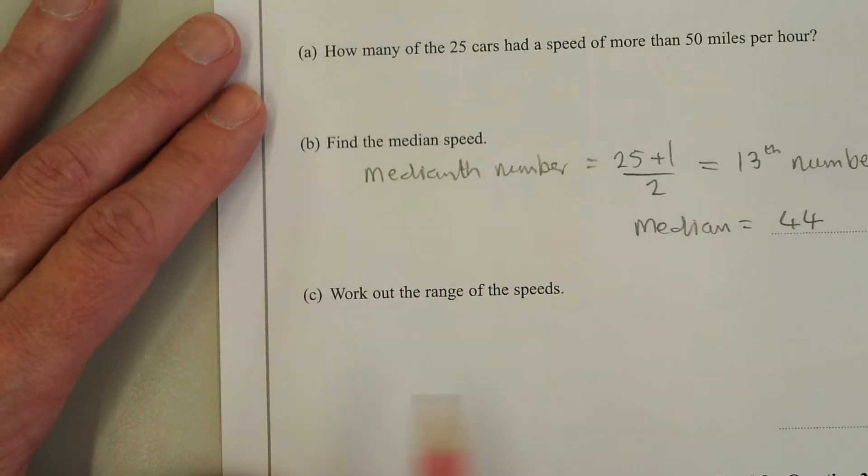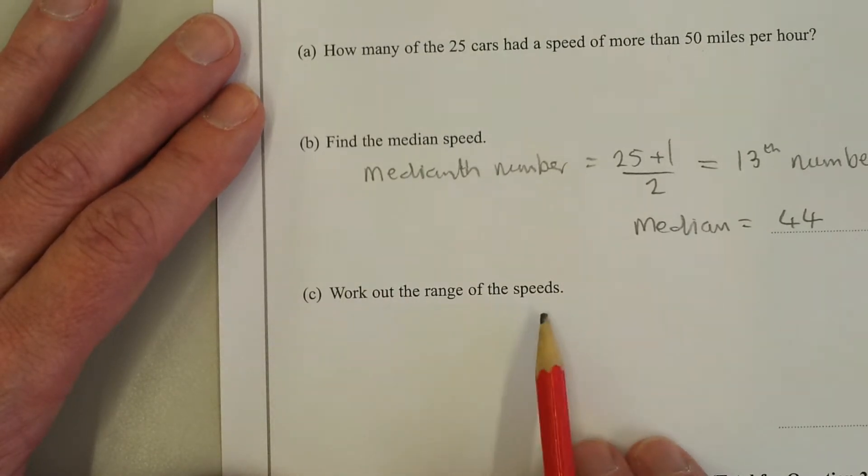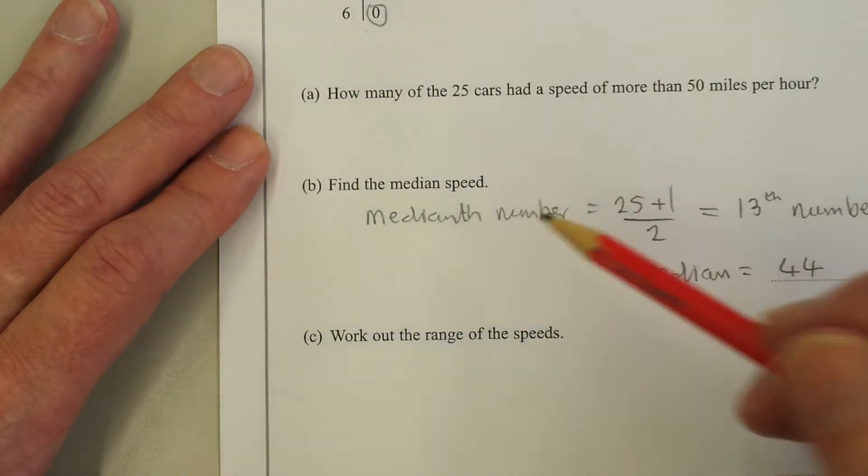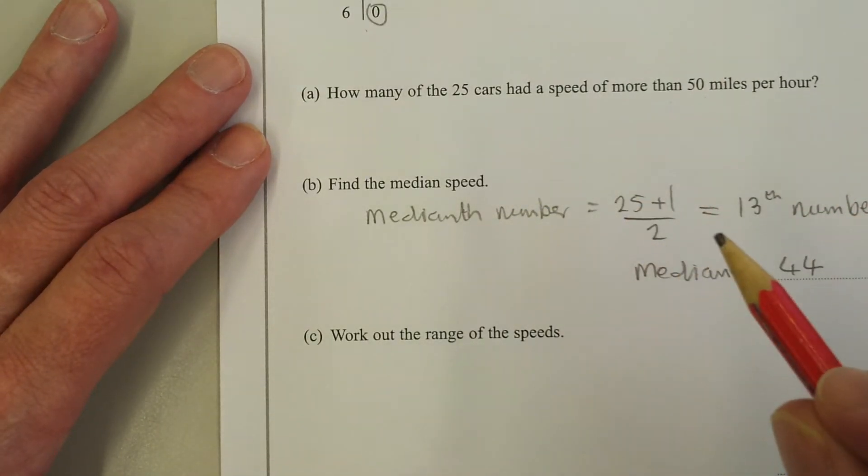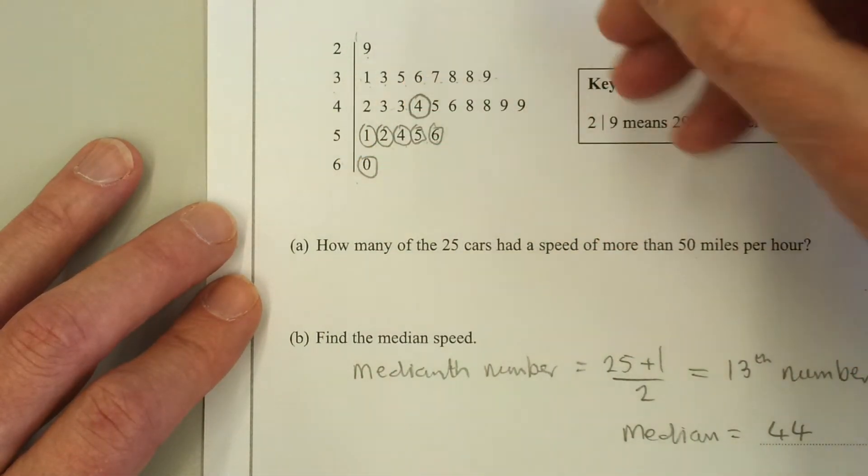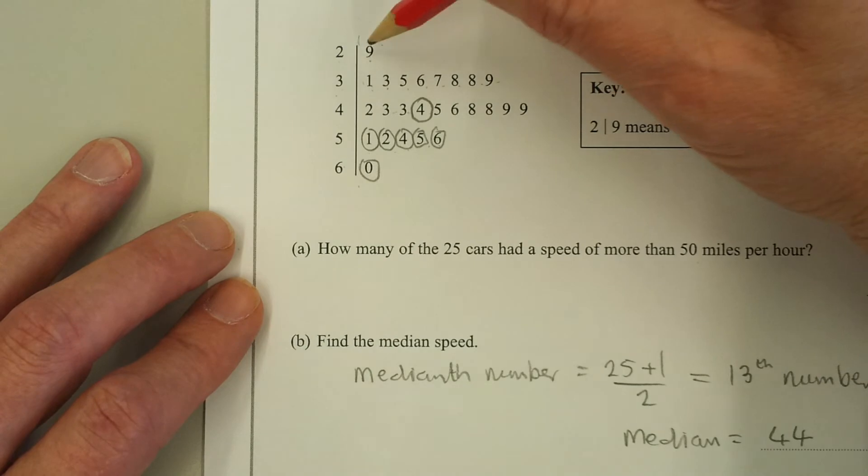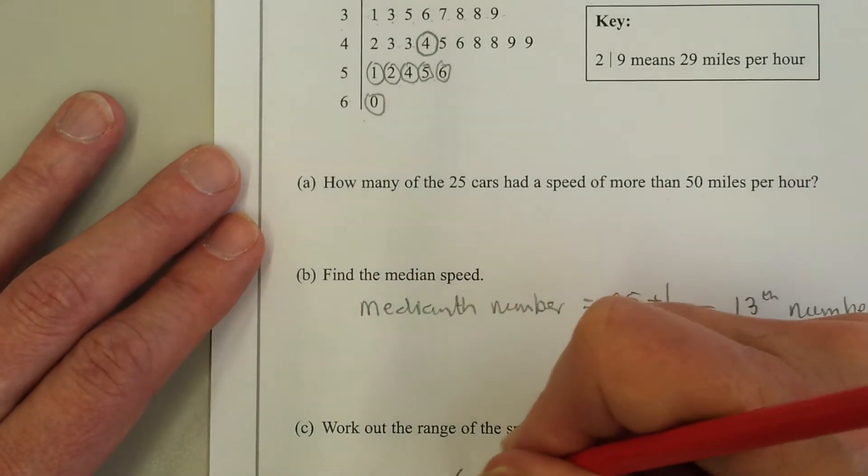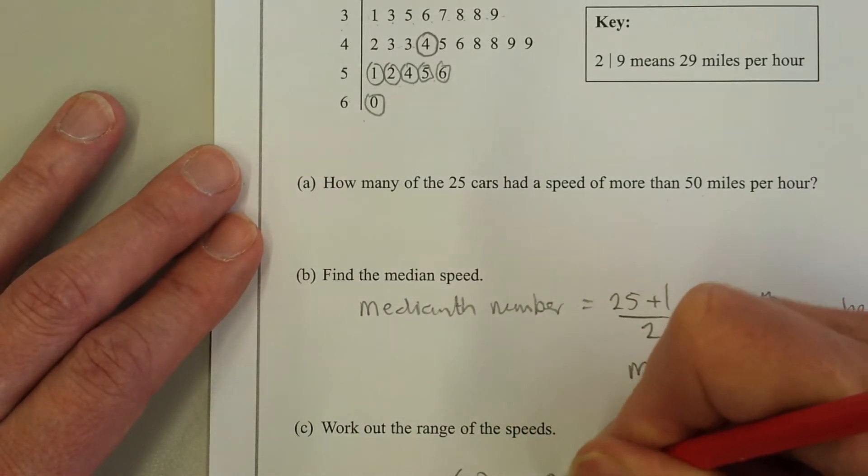Part C: Work out the range of the speeds. The range is the biggest number minus the smallest number. From the table, the biggest number is 60 and the smallest number is 29. So the range is 60 minus 29.